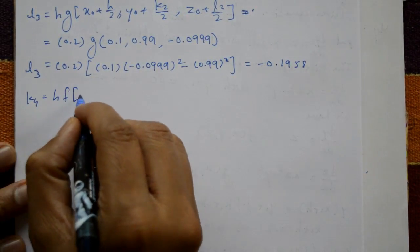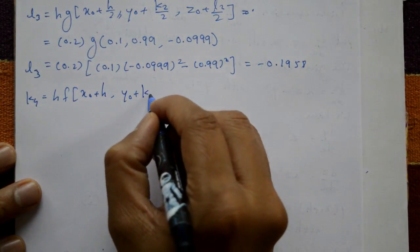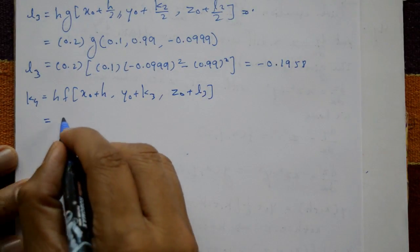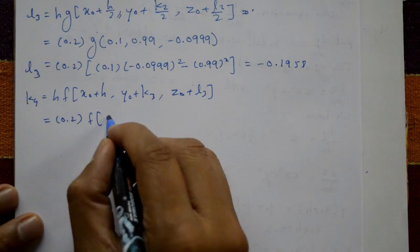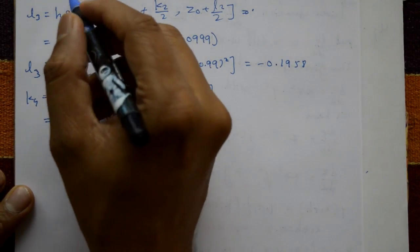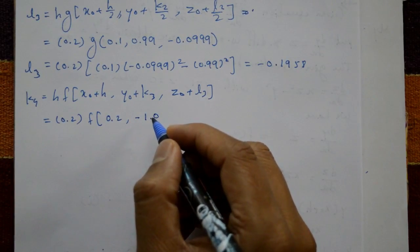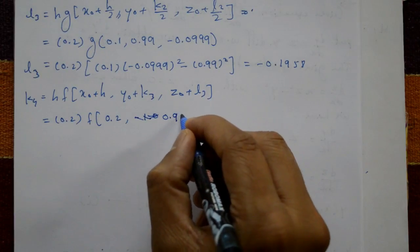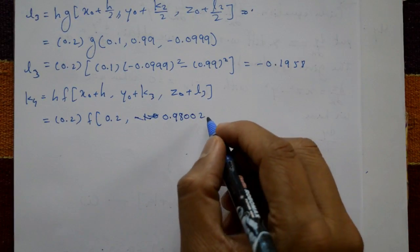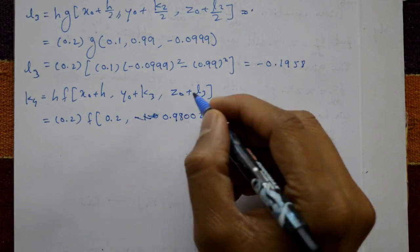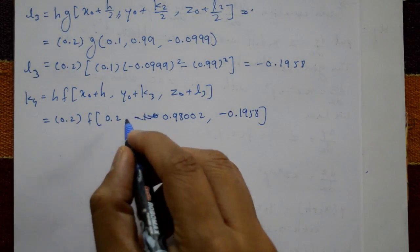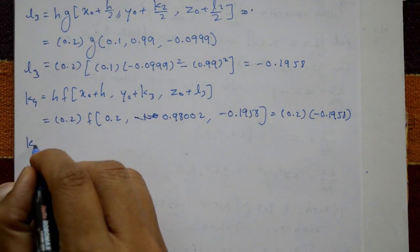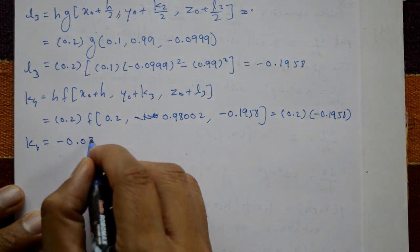k4 = h·f(x₀ + h, y₀ + k3, z₀ + l3) = 0.2·f(0.2, 1 - 0.01998, 0 - 0.1958) = 0.2·f(0.2, 0.98002, -0.1958). Since f = z, k4 = 0.2 × (-0.1958) = -0.03916.